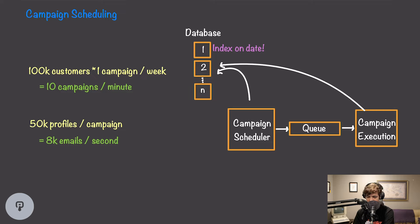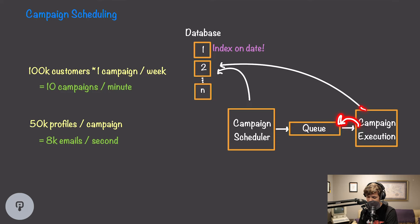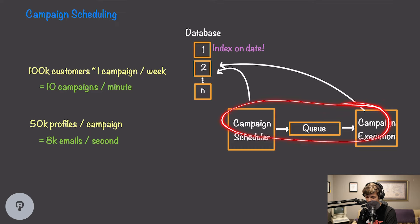Doing the math: with 100,000 customers each doing one campaign per week, we only need to process 10 campaigns per minute. However, each campaign has 50,000 profiles, resulting in 8,000 emails sent per second. We only need a single campaign scheduler node, but we should index the database on the campaign date to ensure efficient reads. To decouple scheduling from execution, we introduce a queue: the campaign scheduler adds campaigns to the queue, and a campaign execution service pulls from it, finds the email addresses, and queues those emails with the email service. We can scale the execution service by adding multiple workers reading from the queue.